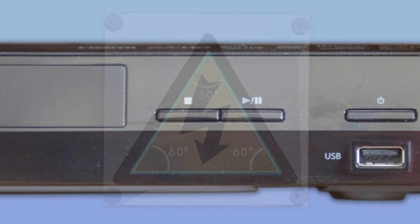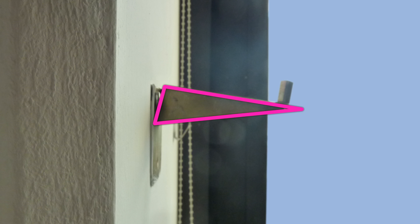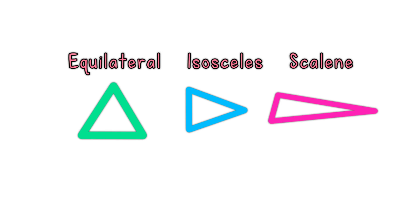An isosceles triangle has two equal sides and two equal angles. A scalene triangle has no equal sides and no equal angles. Equilateral, isosceles, and scalene.